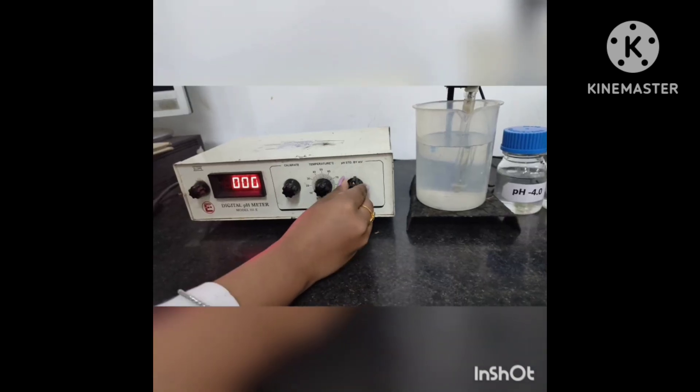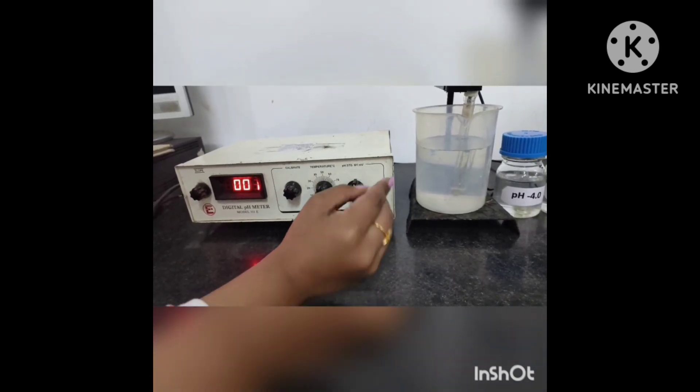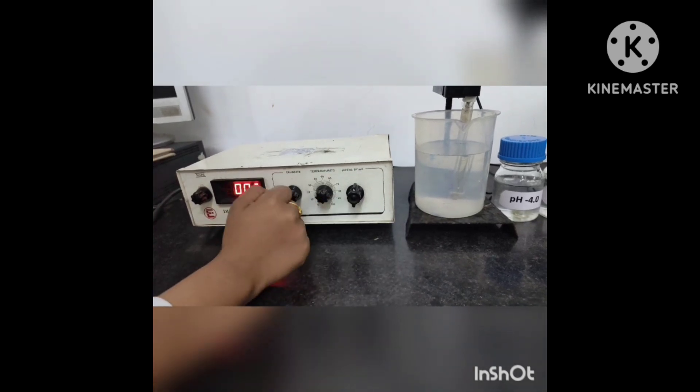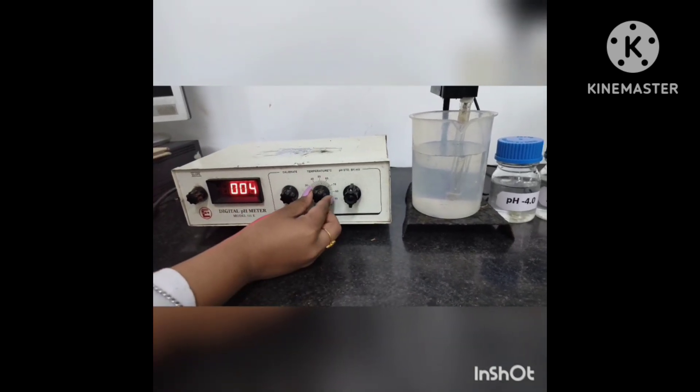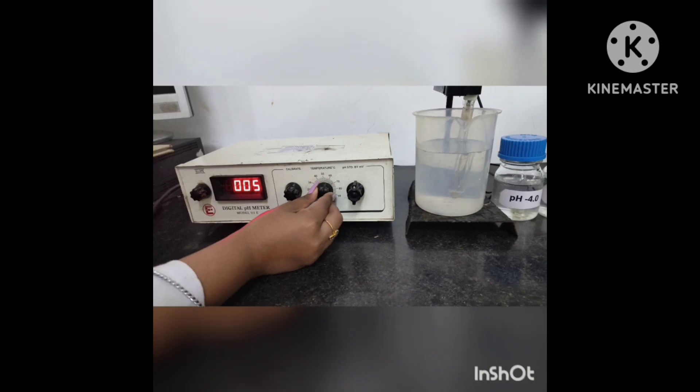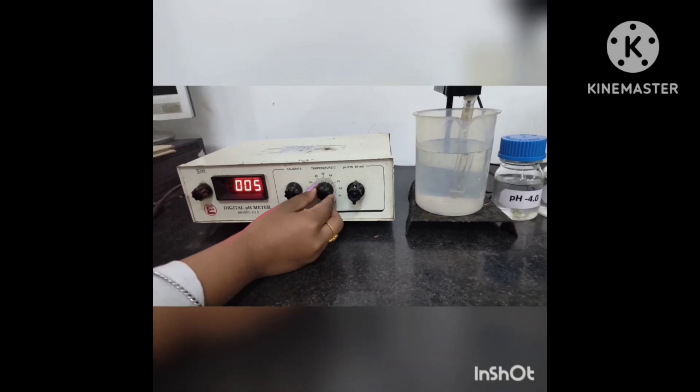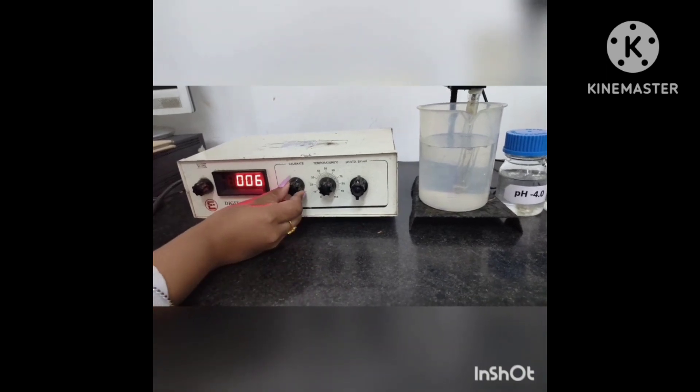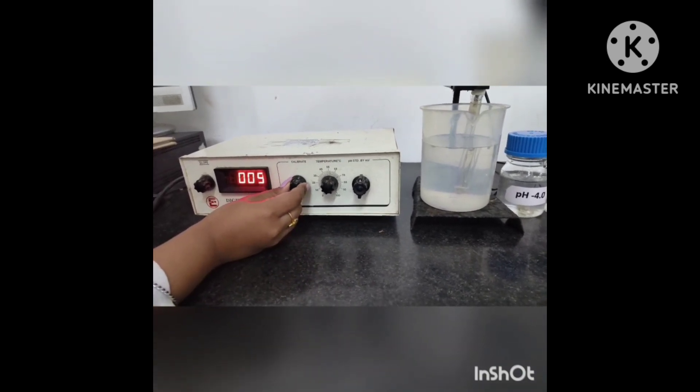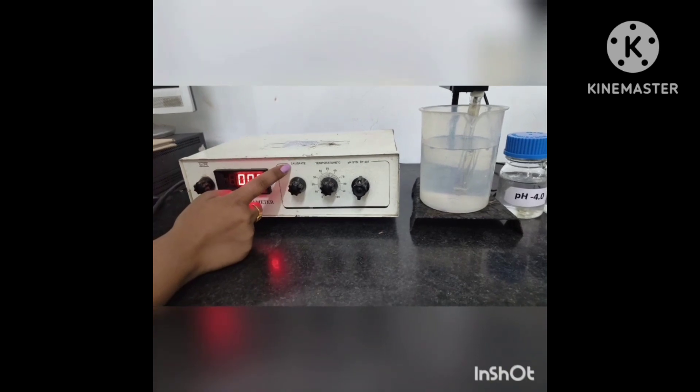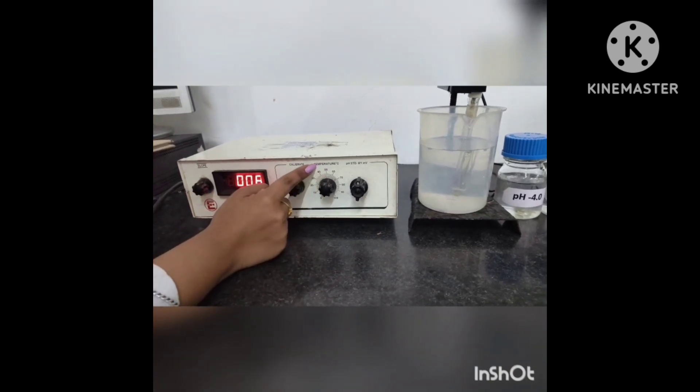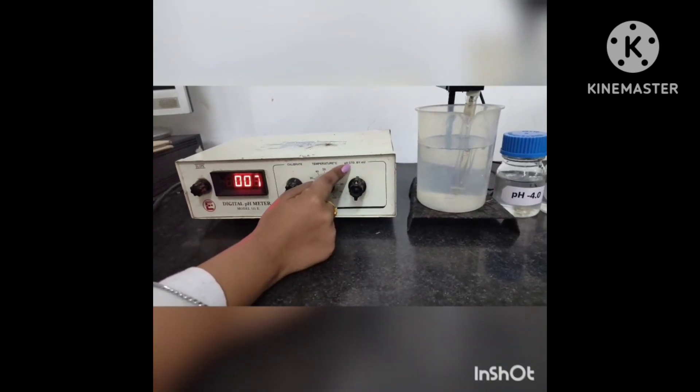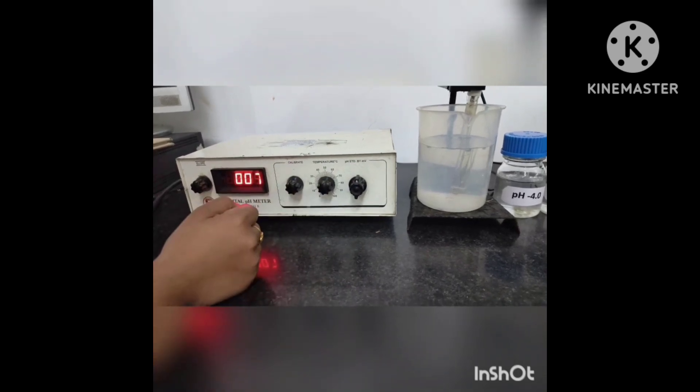The first knob is the amplifier knob, the second one is for temperature regulation, and the third knob is for calibration. All three knobs are important for the adjustment of pH and temperature as well as for the correct value of the pH. We will further know about the functions of these knobs.